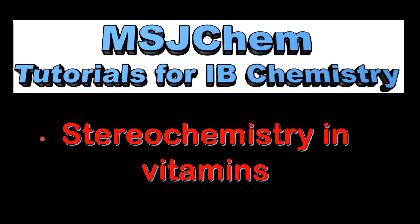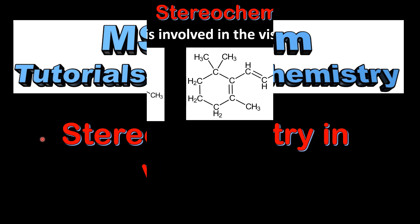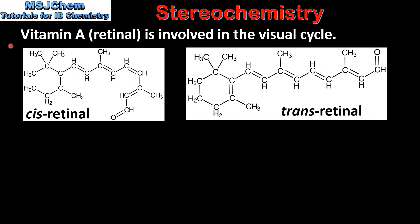This is MSJ Chem. In this video I'll be looking at stereochemistry in vitamins. Vitamin A, which is also known as retinal, is involved in the visual cycle. Here we can see the two isomers of retinal. On the left we have cis retinal, on the right we have trans retinal.